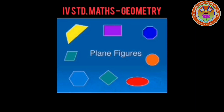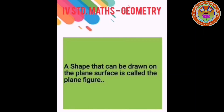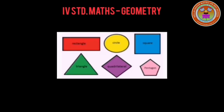Now let me explain plane figures. What is meant by a plane figure? A shape that can be drawn on a plane surface is called a plane figure. For example: rectangle, circle, square, triangle, quadrilateral, pentagon — these are all examples of plane figures.